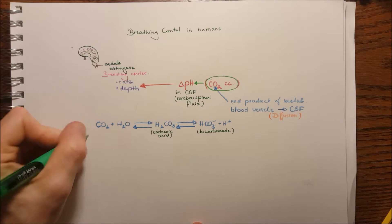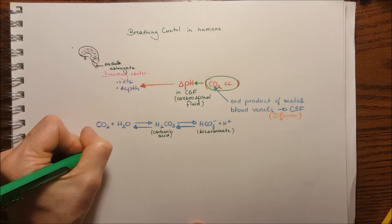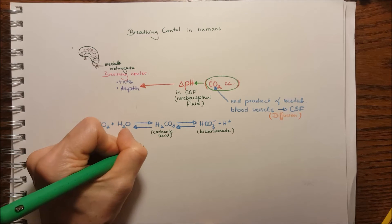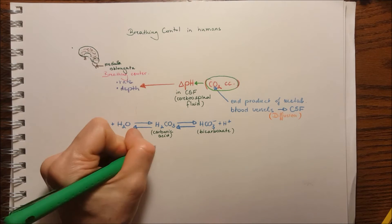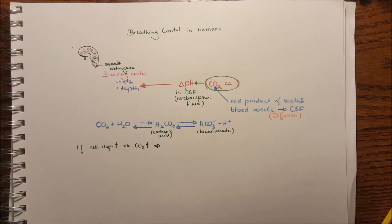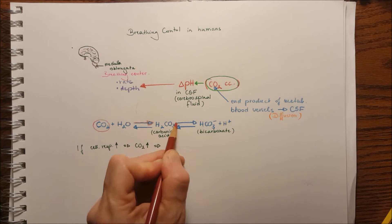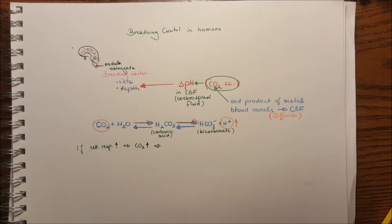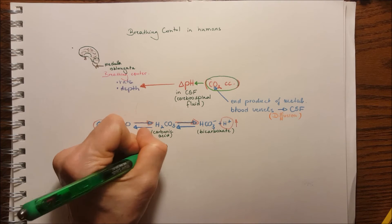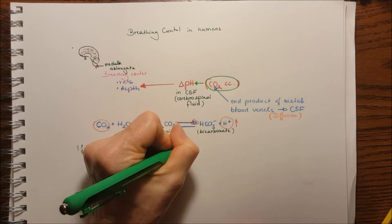If in a cell the cell respiration increases, the CO2 production will increase and will move towards to increase the hydrogen ion levels. So the pH is going to decrease. The environment will be more acidic.